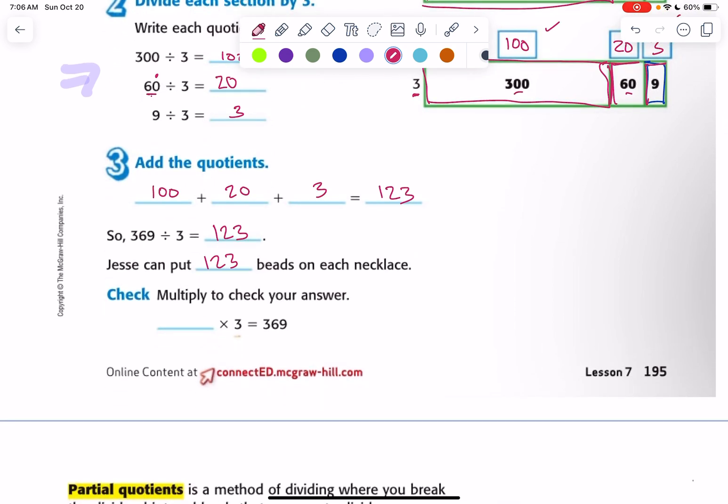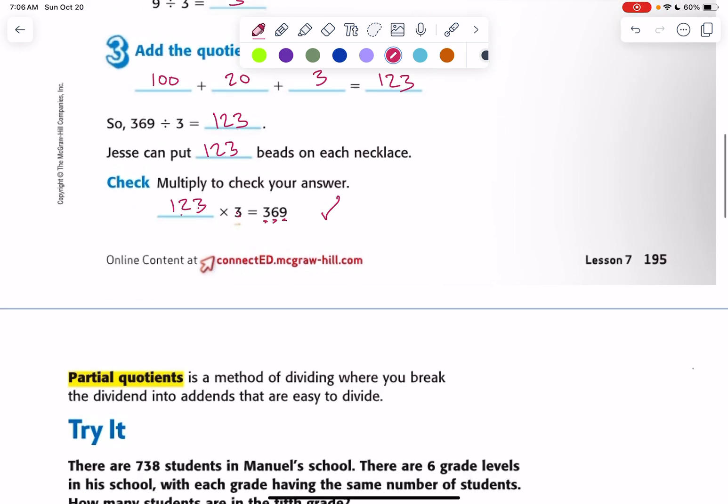Can we check our work? Of course. 123. 3 times 3 is 9. 3 times 2 is 6. 3 times 1 is 3. That checks. Let's try another one.